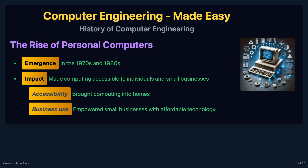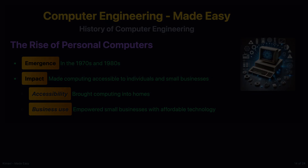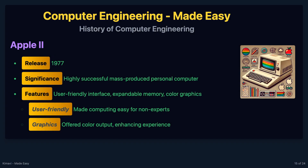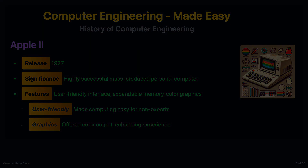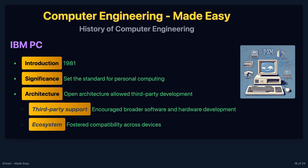The 1970s and 1980s saw the emergence of personal computers, making computing accessible to individuals and small businesses. Released in 1977, the Apple II was one of the first highly successful mass-produced personal computers. It featured a user-friendly interface, expandable memory, and color graphics. In 1981, IBM introduced the IBM PC, which set the standard for personal computing. Its open architecture allowed third-party developers to create compatible hardware and software, fostering a vibrant ecosystem.